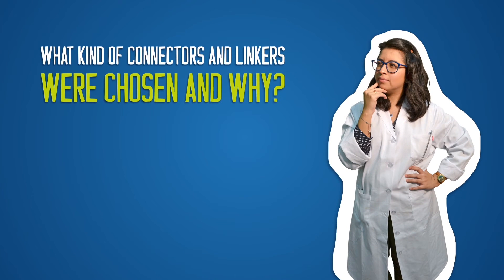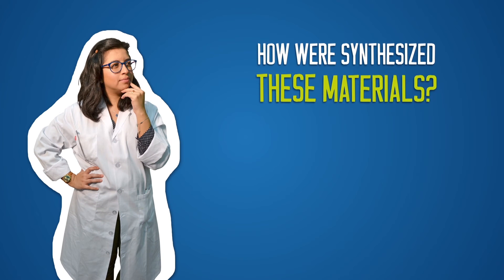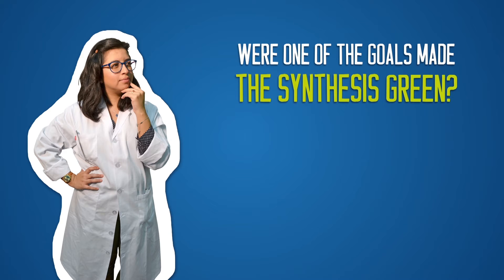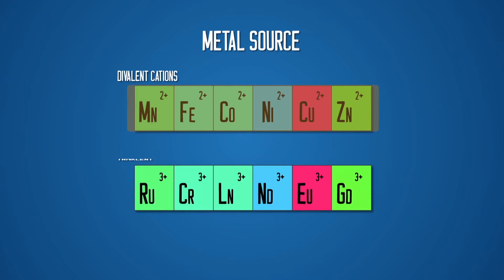What kind of connectors and linkers were chosen and why? How were these materials synthesized? Was one of the goals to make the synthesis green? Among all connectors employed, divalent cations are the most common, followed by the trivalent ones coming from transition and rare earth metals.